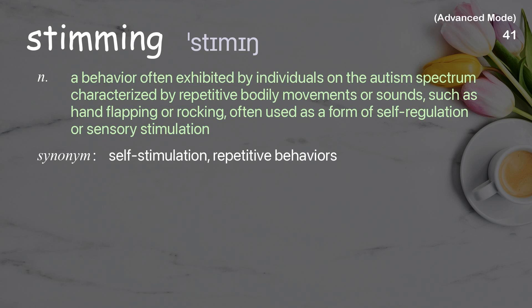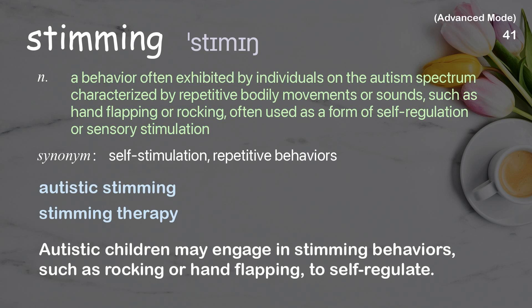Stimming: a behavior often exhibited by individuals on the autism spectrum, characterized by repetitive bodily movements or sounds, such as hand flapping or rocking, often used as a form of self-regulation or sensory stimulation. Examples: autistic stimming, stimming therapy. Autistic children may engage in stimming behaviors, such as rocking or hand flapping, to self-regulate.